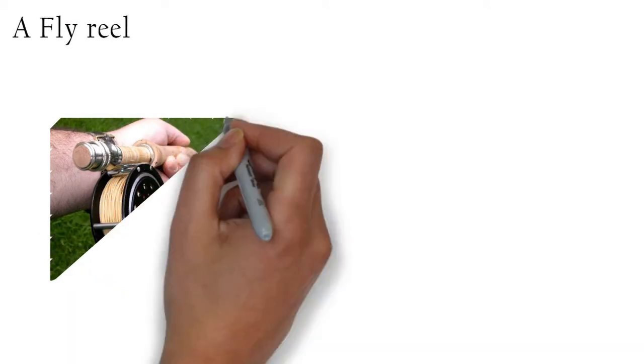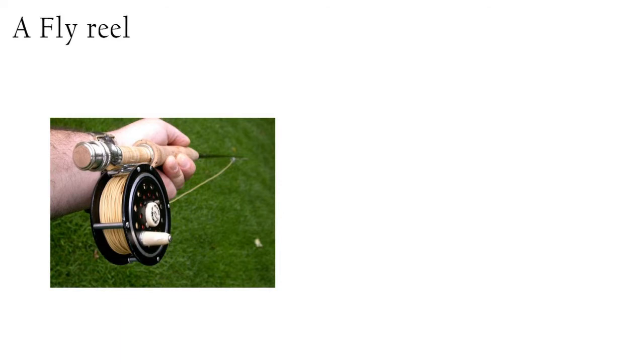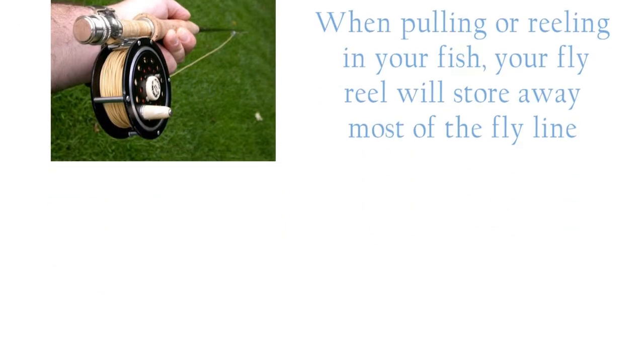A fly reel is a kind of spindle. It is used to coil your fly line around when storing. It typically holds the bulk of your fly line. When casting, your fly line will uncoil to give you length. When pulling or reeling in your fish, your fly reel will store away most of the fly line.